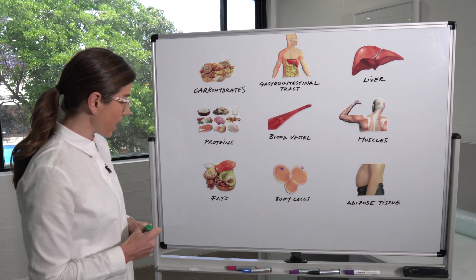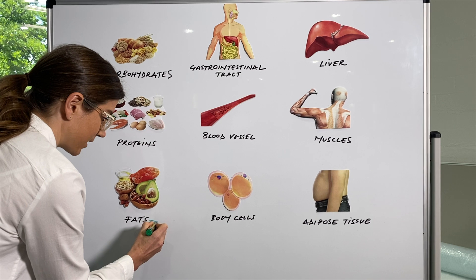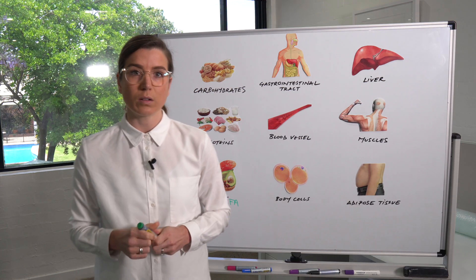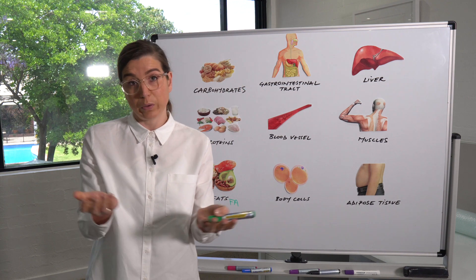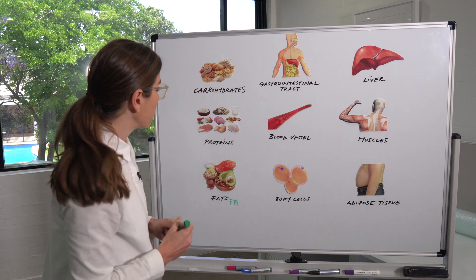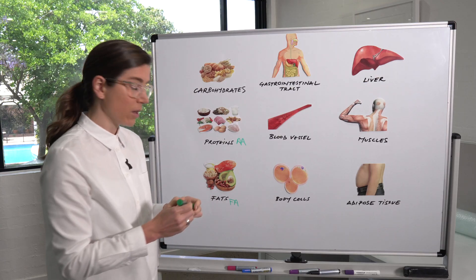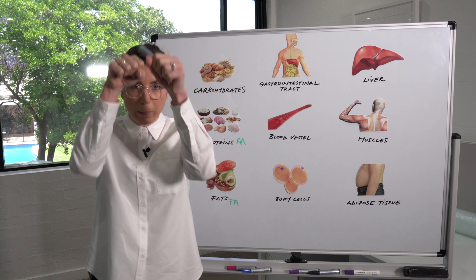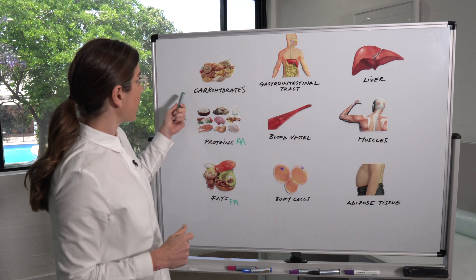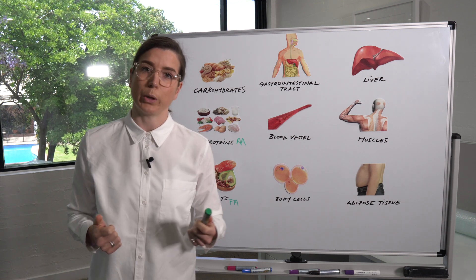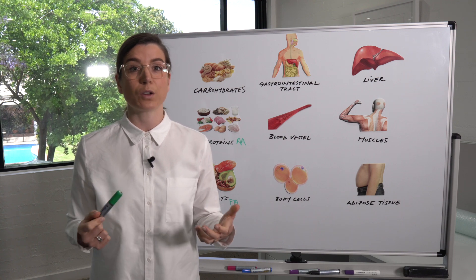Fats are made up of lots of little fatty acids — they are the building blocks of fats. Proteins are made up of lots of little amino acids. Carbohydrates are made up of lots of little sugar molecules, and the one we are most interested in is glucose.